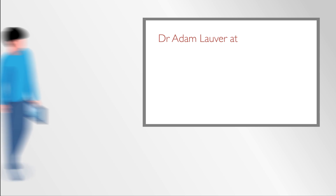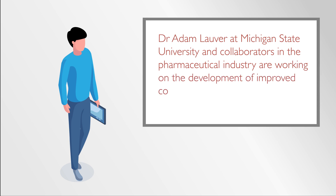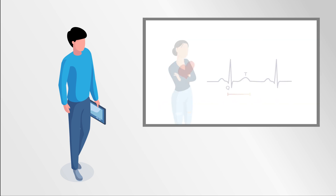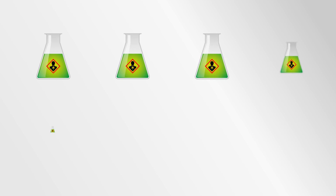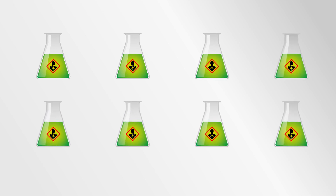Dr. Adam Lauver at Michigan State University and collaborators in the pharmaceutical industry are working on the development of improved correction methods that are specific to each individual. Here, the correction is based on the subject-specific relationship between QT and heart rate rather than a universal correction. In a recent study, Dr. Lauver and colleagues used data from eight animal toxicology studies provided by pharmaceutical industry partners to compare universal and individual correction methods.